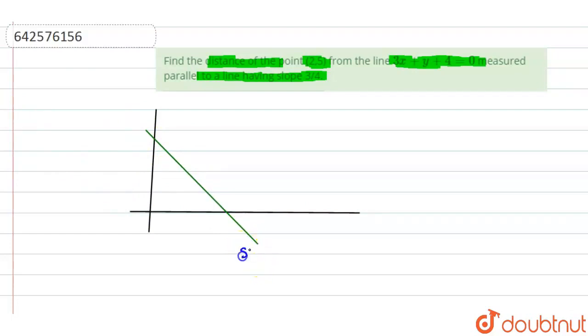This line has slope 3/4, and the point (2,5) lies on this line. There is another line here.